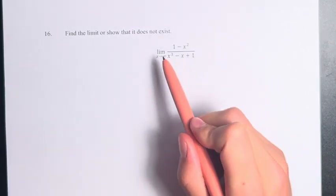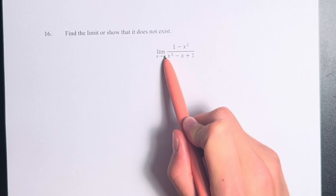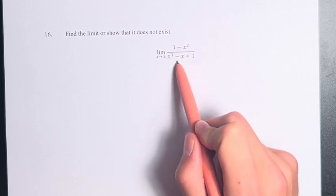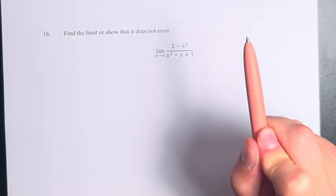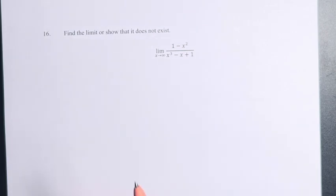What we can say here is we have x is approaching infinity. So if we have a rational function, the only term that matters in the numerator and the denominator is the term with the highest exponent, the highest degree of x.